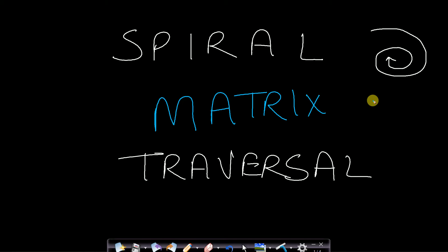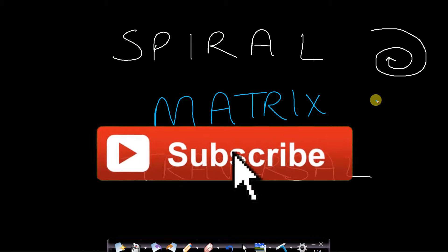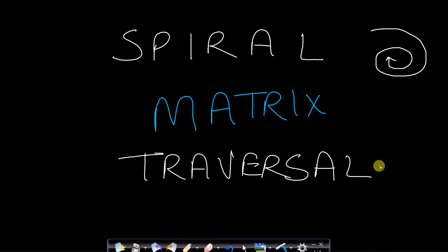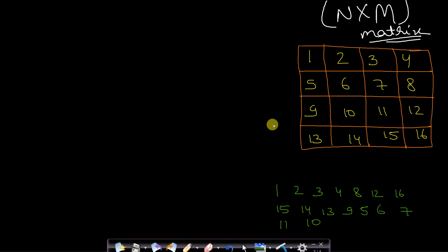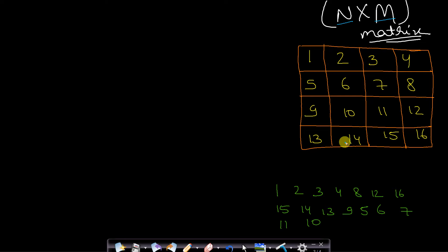Hello guys, welcome back to TakeDose. In this video we will see a frequently asked interview question: the spiral matrix traversal. Let us look at the problem statement. Assume you are given an n by m matrix, which may be a square or rectangular matrix. You are required to print the matrix elements in a spiral format.